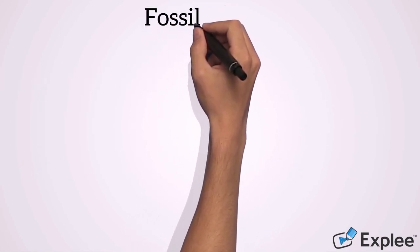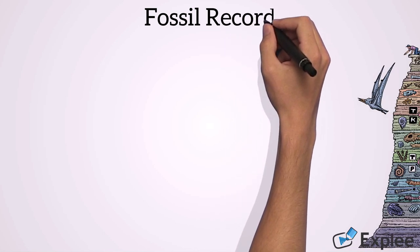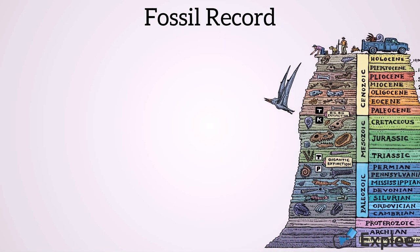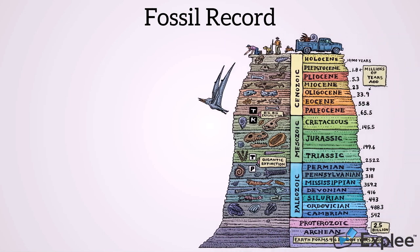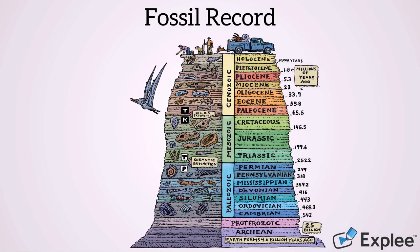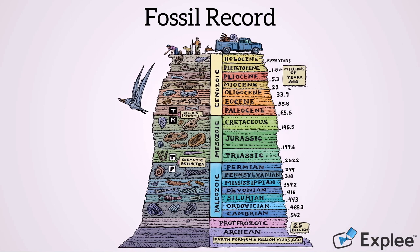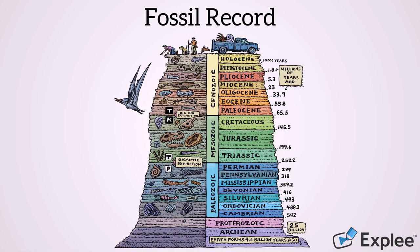Our fossil record is the collection of fossils and remains from organisms that existed before us. These organisms may have gone through evolutionary change and succumbed to environmental pressures or natural changes. The fossil record allows us to better understand the history of life, helps us draw a timeline of geology, and helps us trace evolutionary changes throughout time.